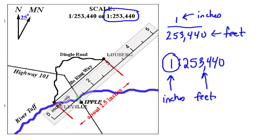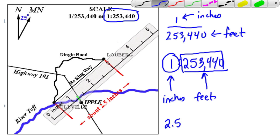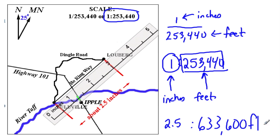So if you measure it and you find that you have 2.5 inches, well, we have a new ratio where the inches are now 2.5 instead of 1, or 2.5 times greater. So our feet should be 2.5 times greater than this number. And that will tell you the total distance from one point to the other. In this case, it would be 633,600 feet.